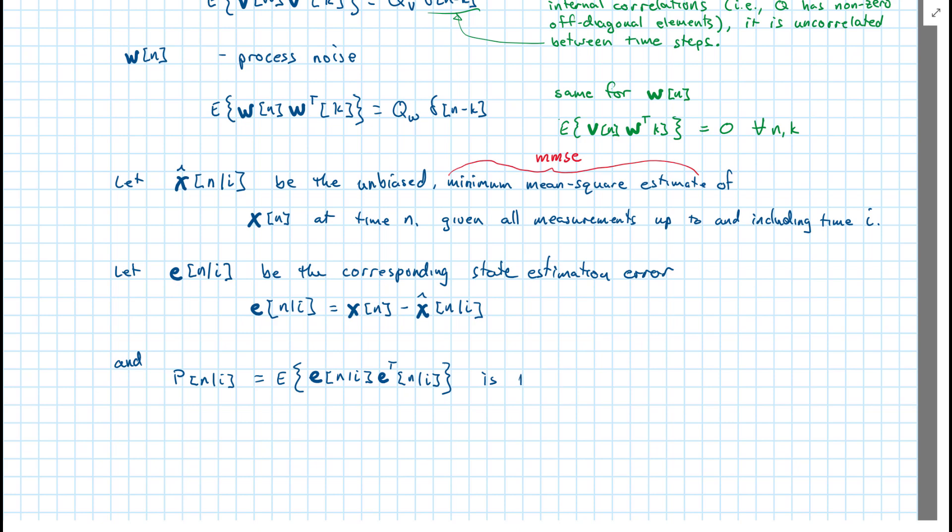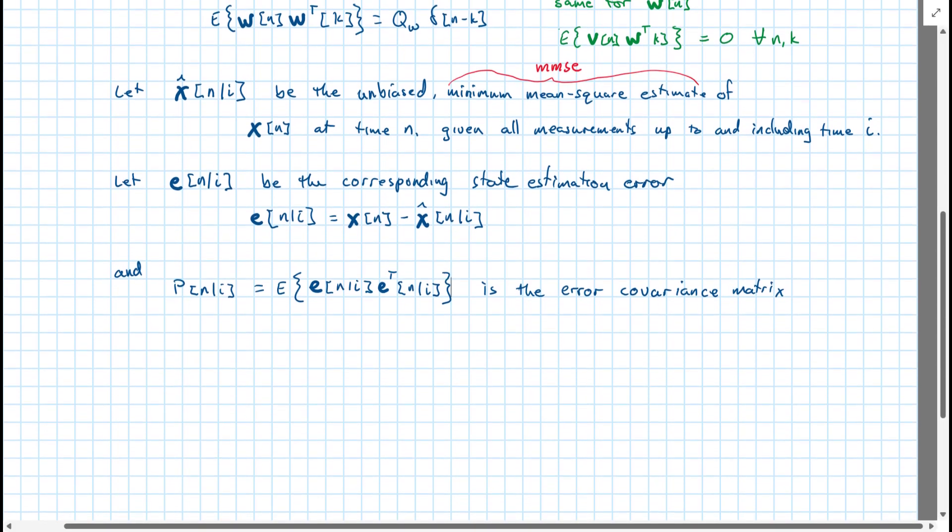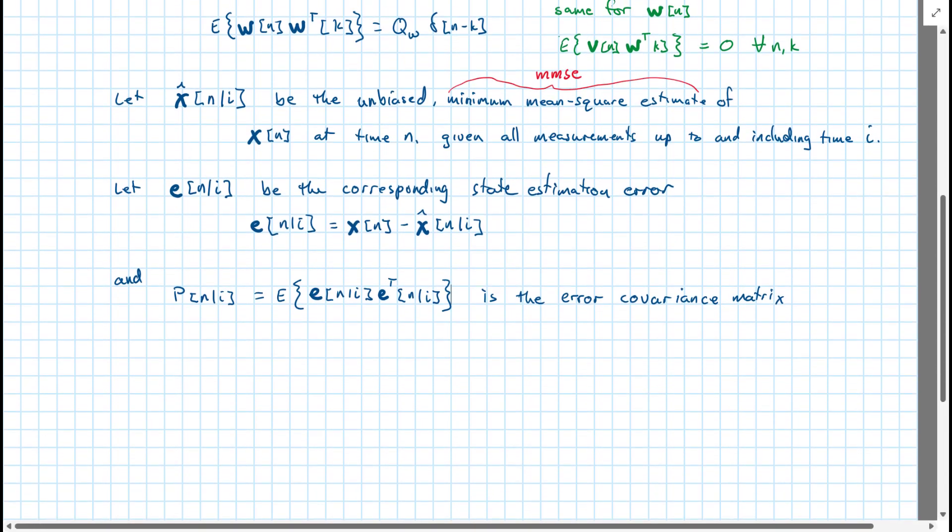we're going to use P to be actually our estimated autocorrelation matrix. We need more letters in the alphabet if we wanted to keep everything completely independent of each other, but we can't. And I used the term autocorrelation. I probably should have used the term covariance.